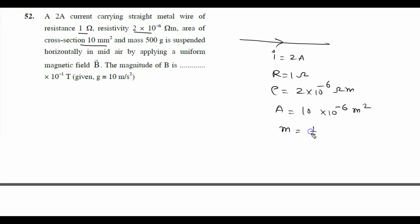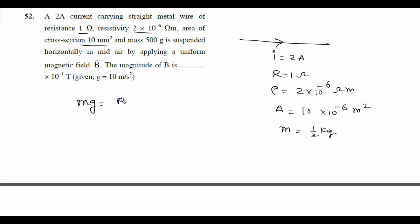500 grams divided by 1000 gives 1/2 kilogram. The wire is suspended horizontally in midair by applying a uniform magnetic field B. For the wire to be suspended, the downward gravitational force must be balanced by the upward magnetic force, that is BIL.